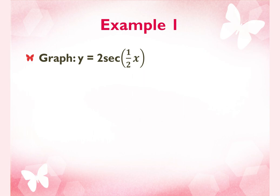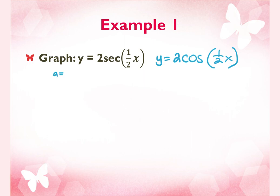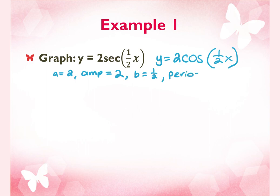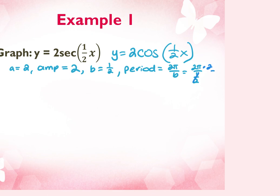Now we're going to do it. We're going to start by first changing this to its reciprocal function. The reciprocal of secant is cosine. So we rewrite this as y equals 2 cosine ½x. Then we go through the same steps. A is 2, so amplitude is 2. B is ½, so the period is 2π over ½. Keep-change-flip that, and I get 4π.